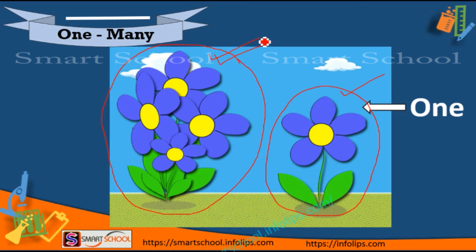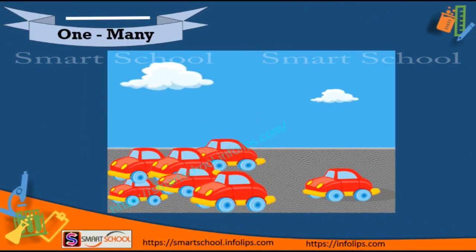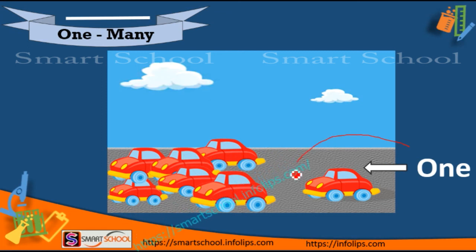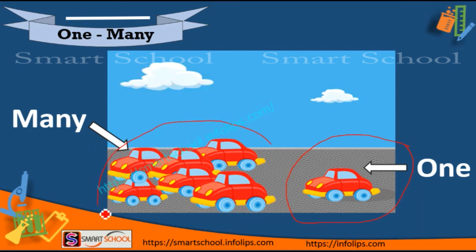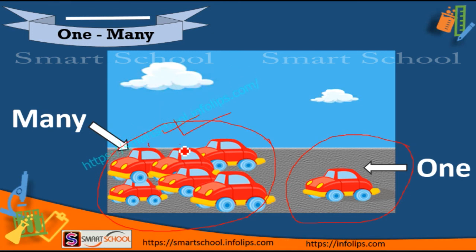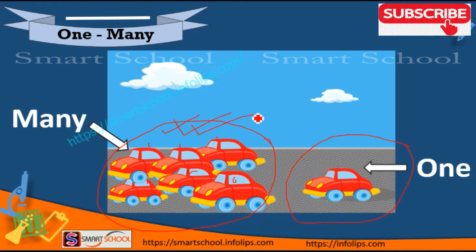Let's see next one. Tell me one car and many cars. The first one is many cars and the second one is one car. This is one car, and these are many cars because there are more than two — there are six cars.